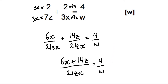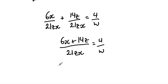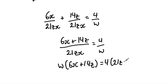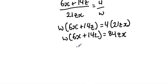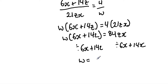Next, we cross multiply by multiplying both sides by W and by 21zx. This gives W times (6x plus 14z) equals 4 times 21zx. Simplifying: W(6x plus 14z) equals 84zx. Dividing both sides by (6x plus 14z), therefore W equals 84zx over (6x plus 14z).